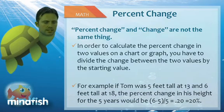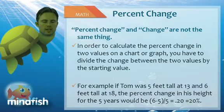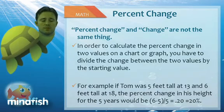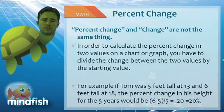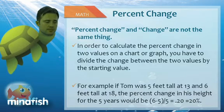For example: Tom was 5 feet at age 13 and 6 feet at age 18. What's his percent change? He was 5 feet at 13 and 6 feet at 18, so he grew 1 foot. But the starting value was 5, so the percent change is 1 over 5, or 20%.